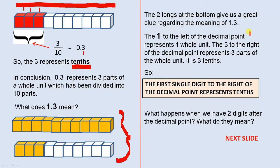The one to the left of the decimal point represents one whole unit. So this one here represents this whole unit. The three to the right of the decimal point represents three parts of the whole unit. It is three tenths.